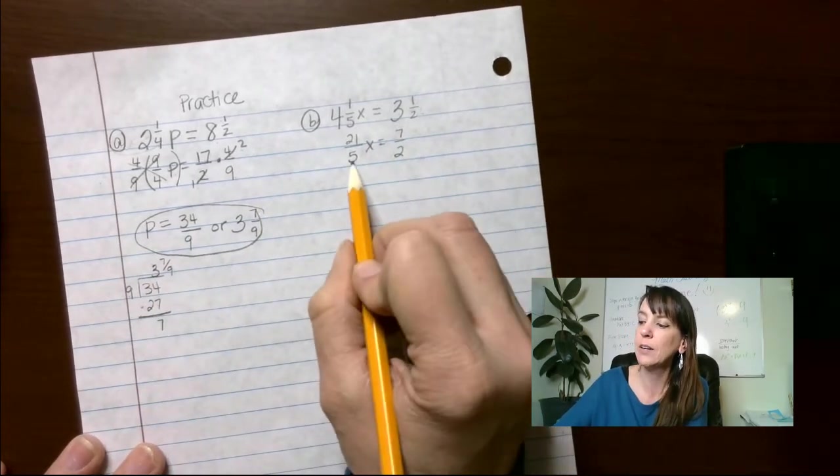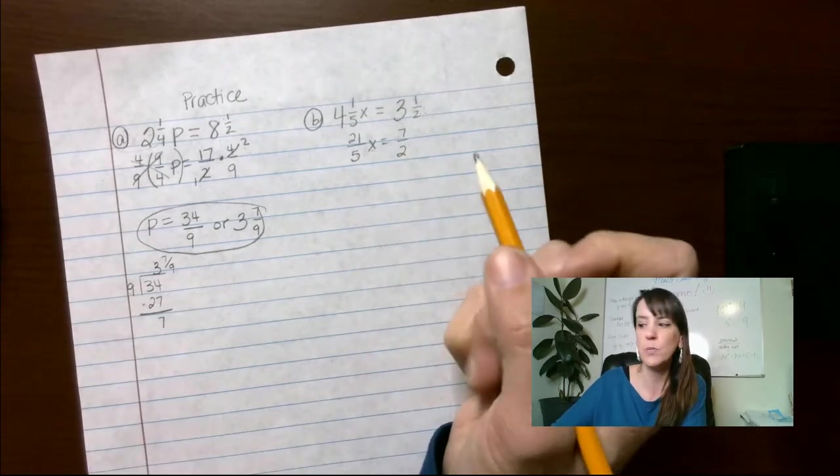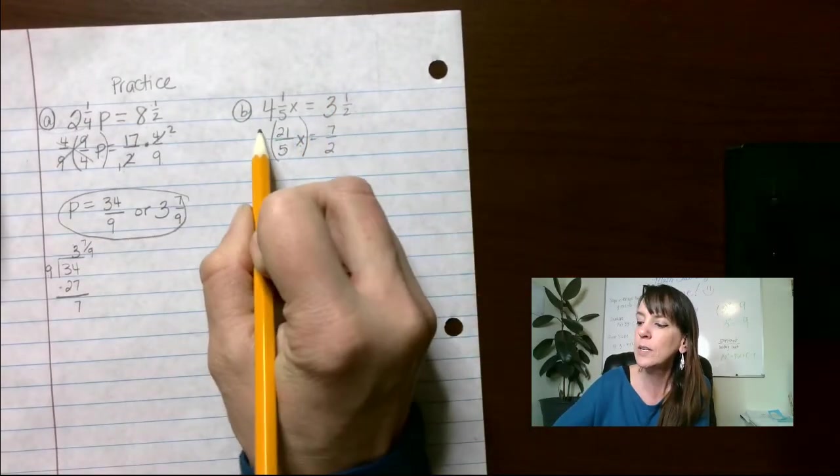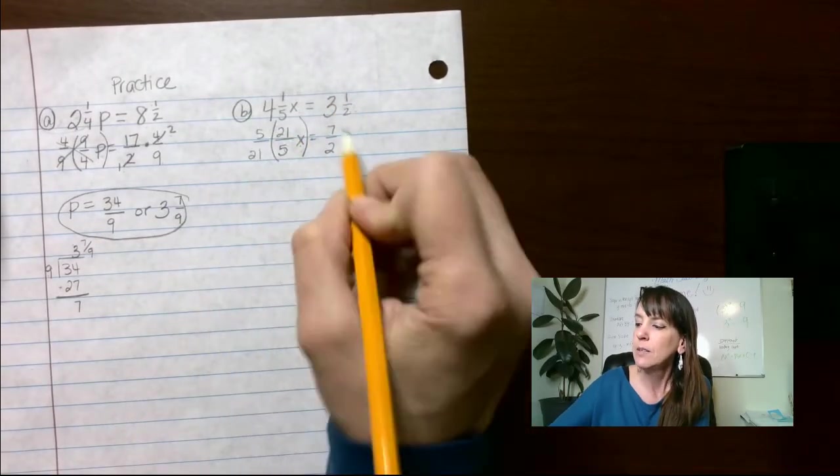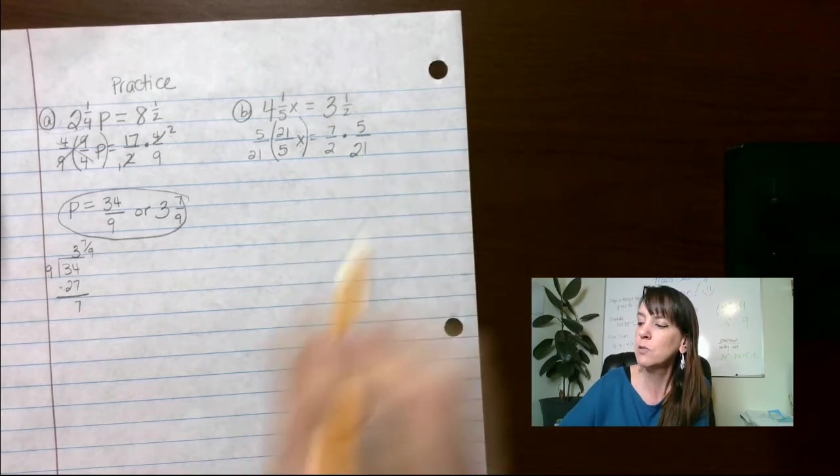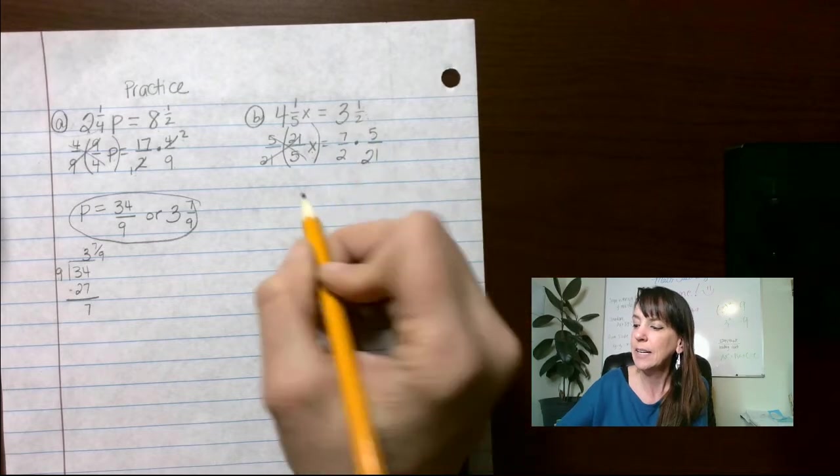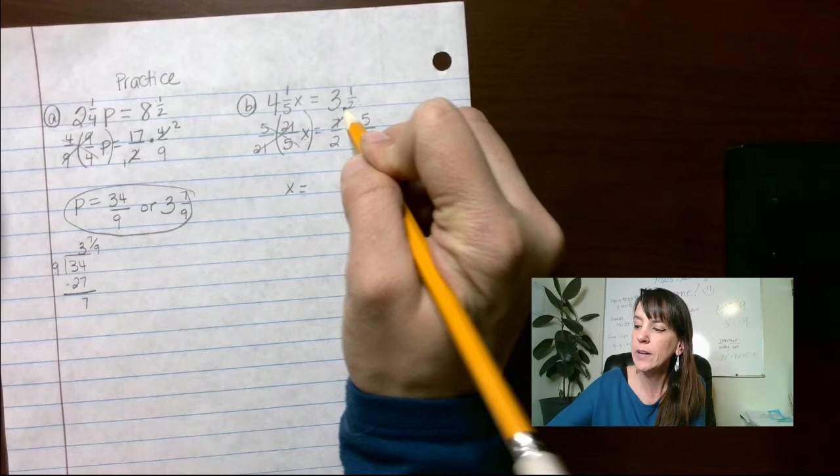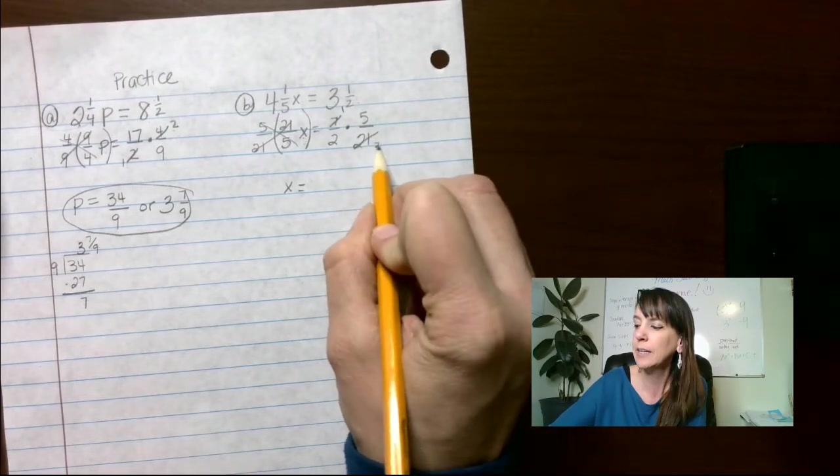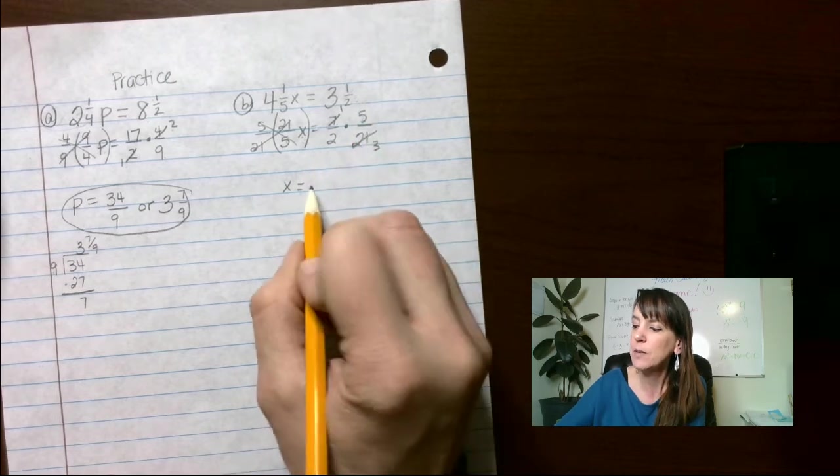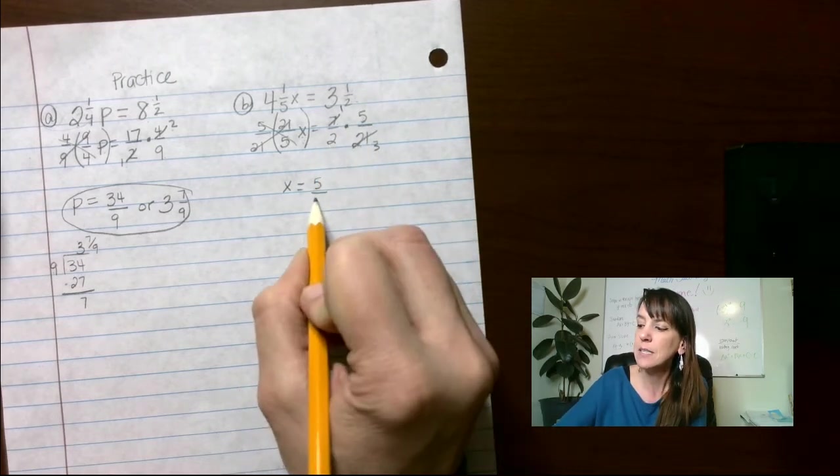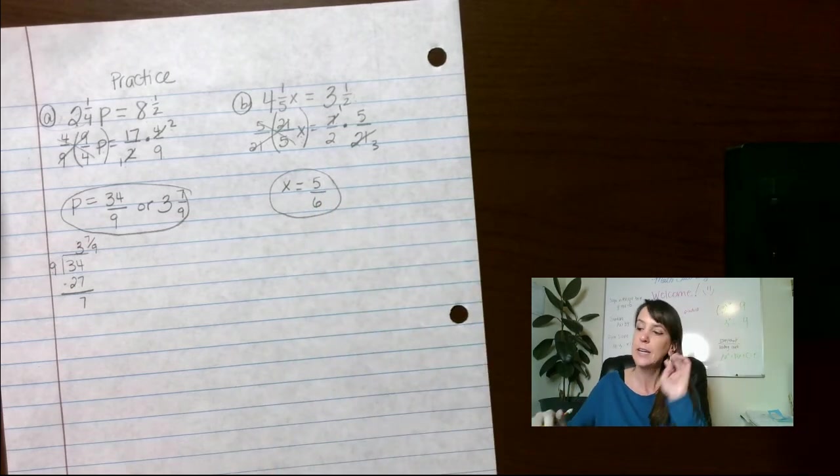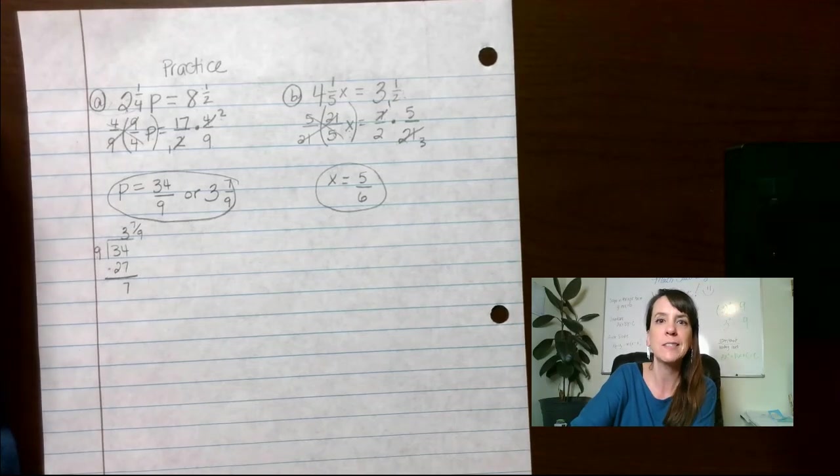Now, over here, we 21 fifths times X equals seven halves. The opposite of multiply is divide, but we don't divide fractions. We multiply by the reciprocal. So, multiply by 5 over 21. These guys cancel out and I get X all by itself. Now, over here, I can divide this by seven and I get one. Divide this by seven and I get three. So, one times five gives me five over two times three gives me six. And that's not an improper fraction. So, we are good and we can't reduce that any further. Okay guys, if you have any questions, let me know. Otherwise, great work.